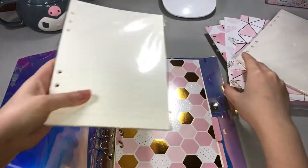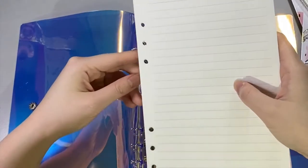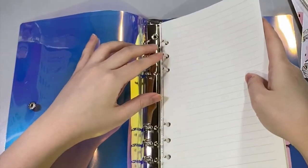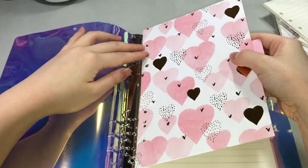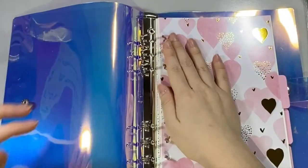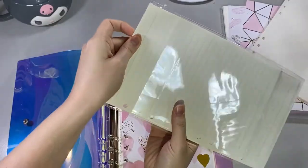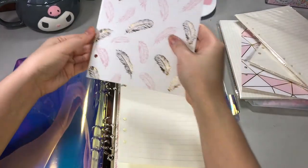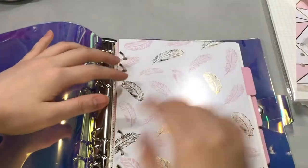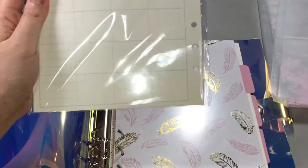As you can see here, I'm putting in the dividers of the six-ring binder. Depending on the section of the journal or business journal, I'm putting either grid paper, dotted paper, or lined paper. Later I will show you the title pages and cover pages of each section.